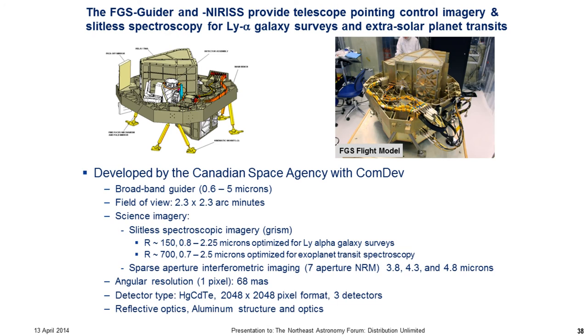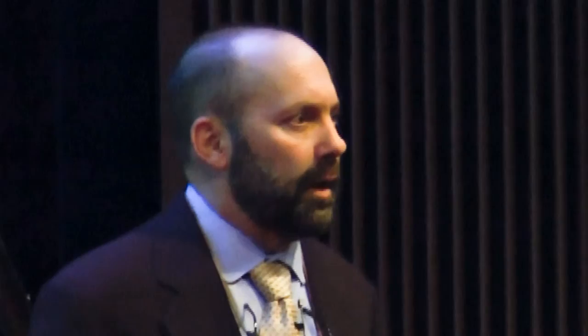Finally, Canada's contribution is the fine guidance sensor, which enables us to lock onto a star and point the telescope. This sensor can measure changes in pointing of about a millionth of a degree. On the same optical bench there is also a science instrument specifically designed to do transit spectroscopy to obtain spectra of extrasolar planets.